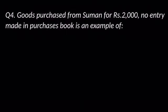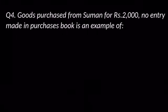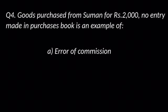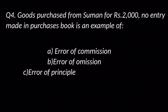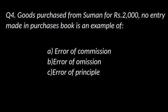Question number four: Goods purchased from Suman for Rs. 2,000 — no entry made in the purchase book. This is an example of — options are: A. Error of commission, B. Error of omission, C. Error of principle, and D. Error of posting. The answer is B: Error of omission.